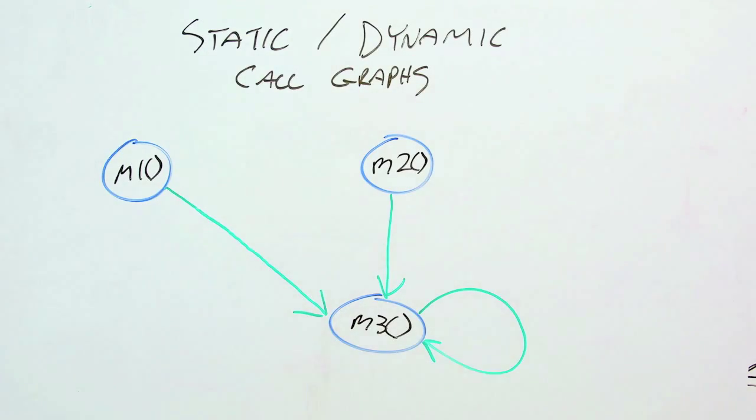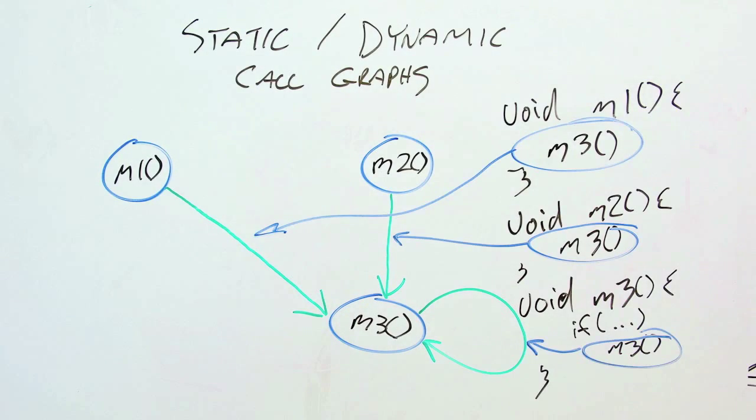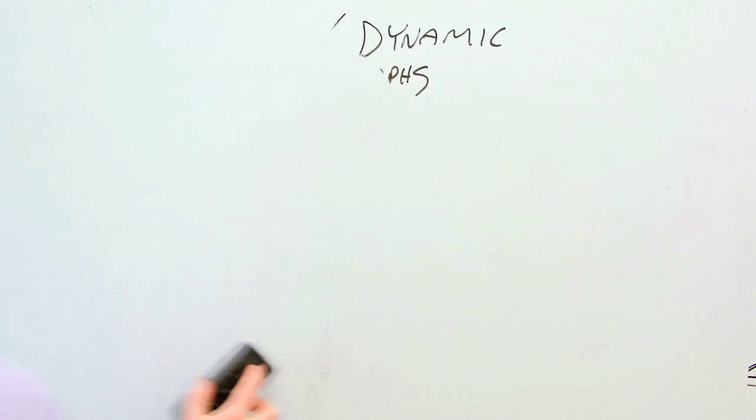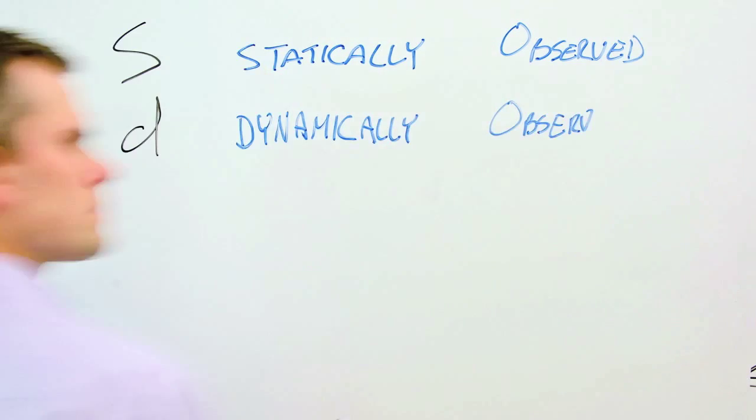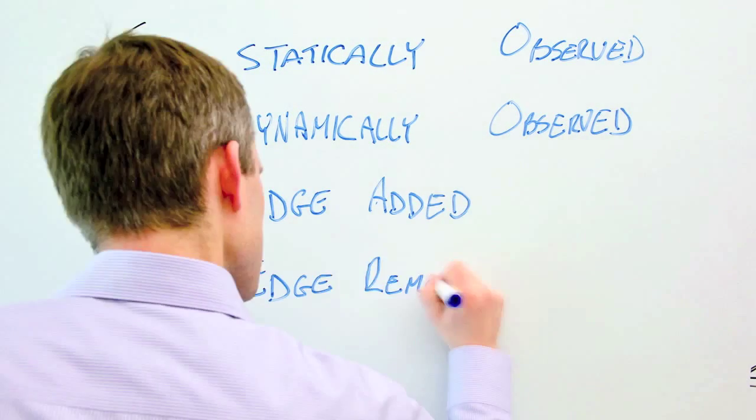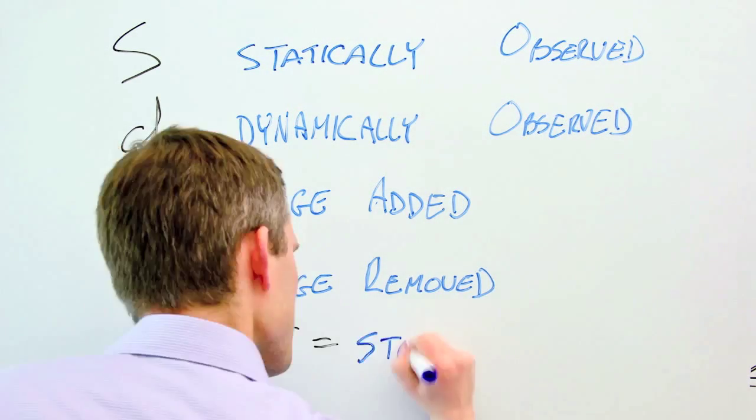The nodes of the static and dynamic call graphs represent methods, while the graph's edges represent calls between methods. In our notation system, an S represents facts that were identified by the static analysis, while a D represents facts that were identified by the dynamic analysis.